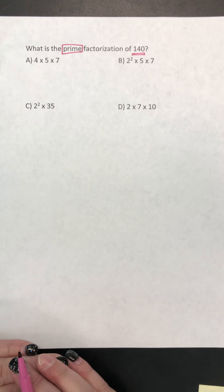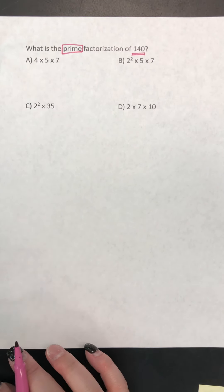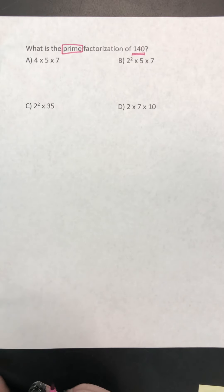And remember, prime numbers are only multiplied to get 1 times itself. So numbers like 2, 1 times 2 is 2.